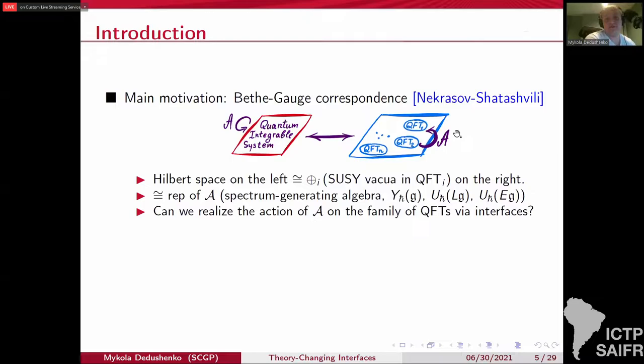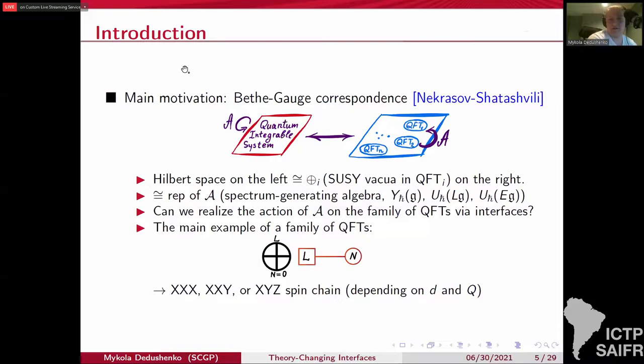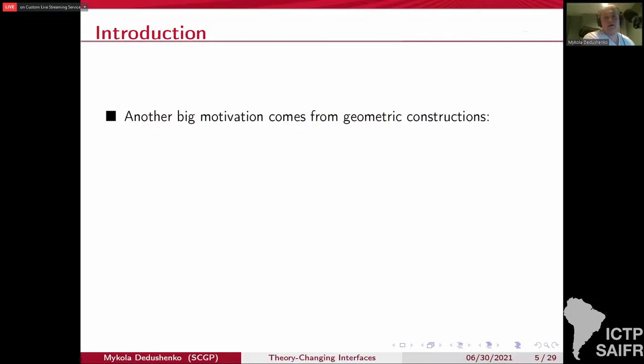The main example of the family you can think of is the following. Imagine a gauge theory with U_N gauge group and L fundamental hypermultiplets. This is a theory with eight supercharges. L is fixed, and N labels members of the family. It goes from zero to L. And on the left, the corresponding integrable system is XXX or XXZ or XYZ spin chain, depending on the dimension your quantum field theory lives in and the supercharges you pick.